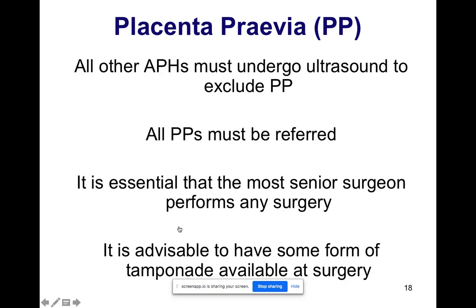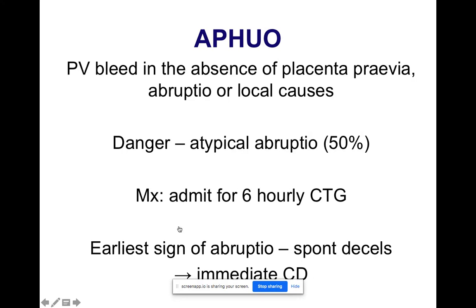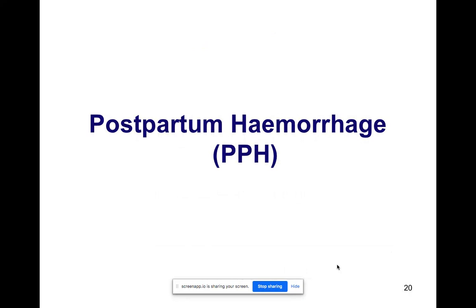For placenta previa, surgery needs to be done by someone senior. It is advisable to have a uterine tamponade available in surgery, because the placenta is in the lower segment — the thinnest part of the uterus — which doesn't contract well after placental removal. The tamponade compresses all the small bleeders. For antepartum hemorrhage of unknown origin — including local causes — 50 percent are at risk of atypical abruption. Admit the patient for 24 hours, do six-hourly CTG, and if you see any spontaneous decelerations, deliver the patient as soon as possible as it may be an early sign of abruption.